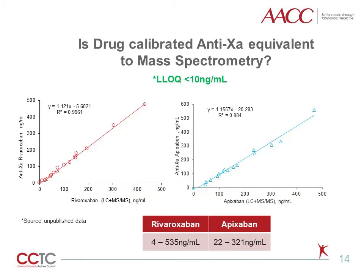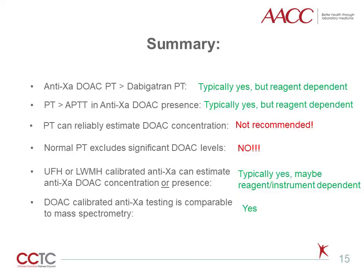These data demonstrate rivaroxaban on the left and apixaban on the right, comparing calibrated anti-Xa activity assay to mass spectrometry. The lower limit of quantitation for both methods was determined to be less than 10 nanograms per ml. This unpublished lower limit of quantitation data was derived from linearity studies, whereas the apixaban figure would suggest a higher lower limit of quantitation.